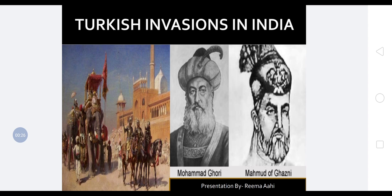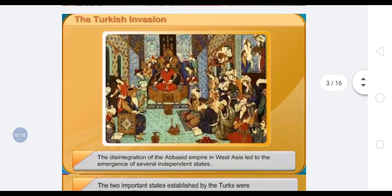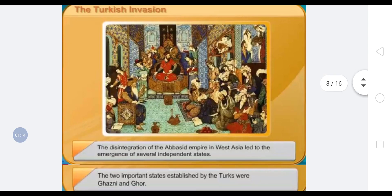The Abbasid Caliphs of Baghdad recruited the Turks as guards and professional soldiers. But by the end of the 9th century, the power of the Caliph weakened because the Turks slowly took over power and became governors of provinces. Some of them asserted their independence from the Caliph and started their own independent kingdoms.